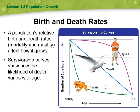Moving to birth and death rates. Birth rate refers to the number of births per 1,000 individuals in a population within a specific time period. It helps us understand the rate at which new individuals are being added to the population. Death rate, on the other hand, refers to the number of deaths per 1,000 individuals in a population within a specific time period. It helps us understand the rate at which individuals are dying within a population. By comparing birth and death rates, we can gain insight into population growth or decline.